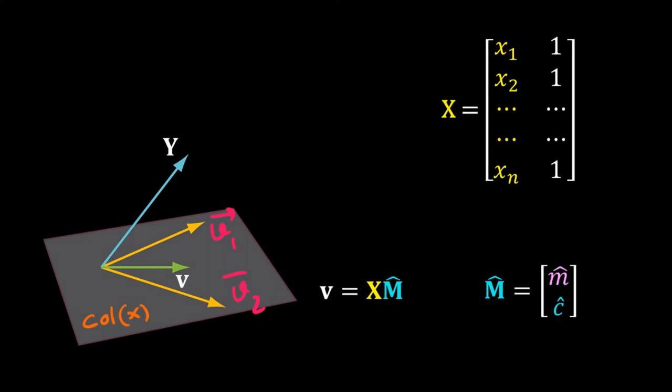m̂ is a vector with lowercase m̂ and lowercase ĉ, just like lowercase m and lowercase c in our original proposal for the linear fit. We don't know the values of m̂ and ĉ — we have to estimate those. To get m̂, we have to use a few more tricks. Y is our original data vector, and v is the vector closest to Y as it is the projection of it, so v is the best fit vector.